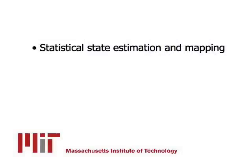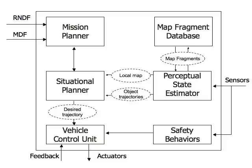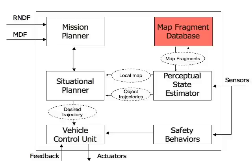MIT will take advantage of its unique research in statistical state estimation and mapping, planning under uncertainty, and statistical perception in developing a software architecture that addresses uncertainty at all levels of the perception, planning, and control tasks. At the high level, our architecture will include a mission planner that manages the global plan, a situational planner that is designed to rapidly handle the uncertainty of the environment, and a perceptual state estimator that extracts salient information from the scene. A map fragment database maintains a history of the relevant scene structure and allows the tactical planner to be more aggressive when revisiting areas.